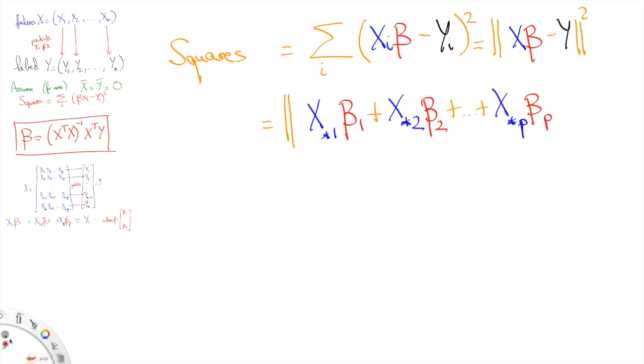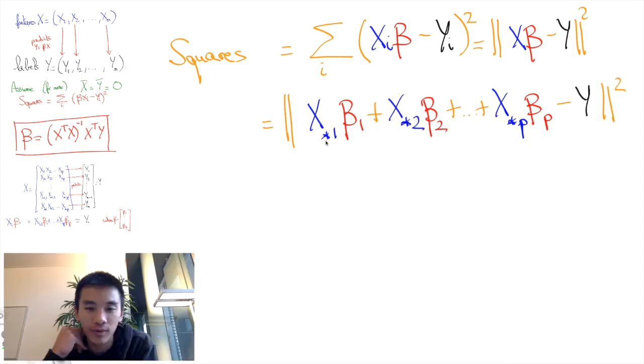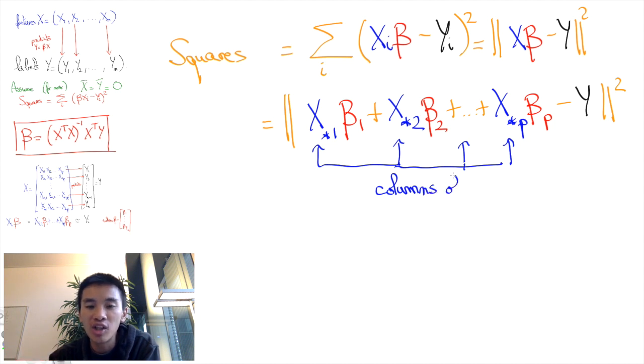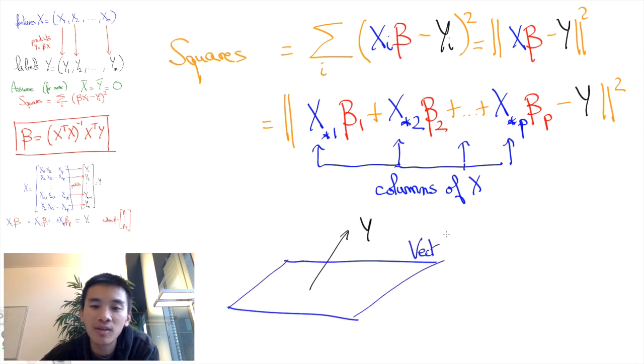This is the linear approximation that we'll get of the vector Y in Rn. So we want to approach the n-dimensional vector Y of labels with a linear combination of the columns of the matrix X. This means that once again we want to minimize the square of the Euclidean distance between a vector Y and a point that must belong to the vector subspace spanned by the columns of the matrix X.